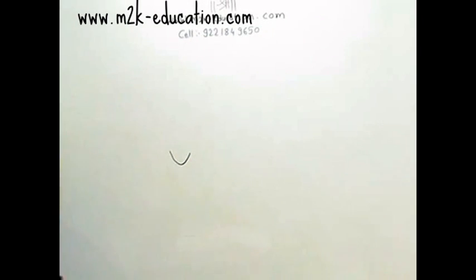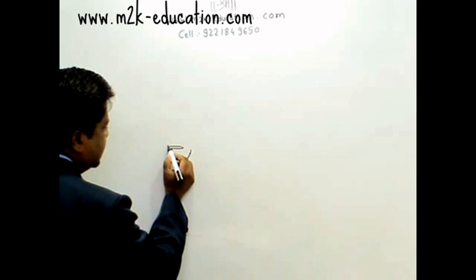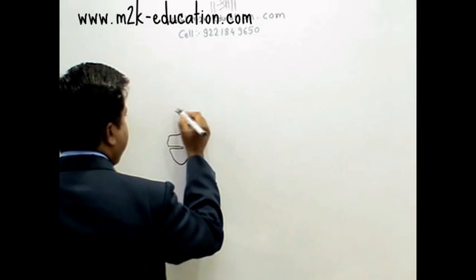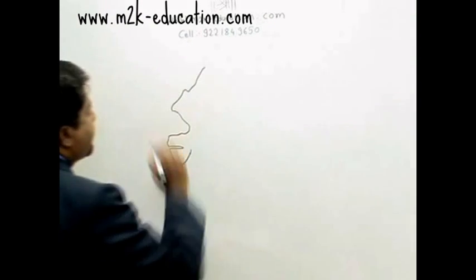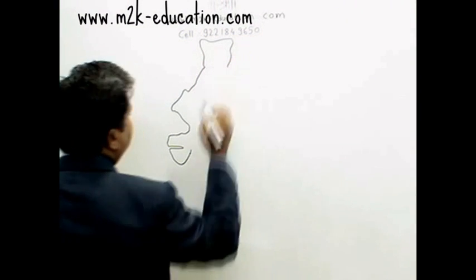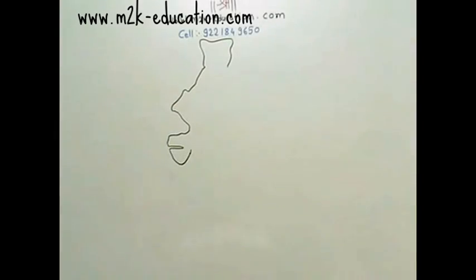Starting the drawing here — this is the Gujarat part, the peninsula of Gujarat. This is Dwarka, and this is the Rann of Kutch. Then there is the Rajasthan part, then Punjab, and the Kashmir territory. Keep in mind this map is not drawn according to scale — it is just for getting us the idea, so it is not perfect.